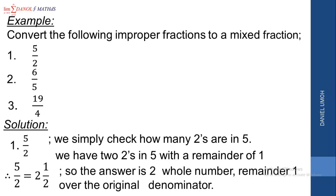I hope you understand what we just explained. What we mean is this: you are given 5 over 2. The first thing we do is check how many 2s are in 5 — of course there are two 2s — with a remainder of 1. So 5 over 2 equals 2 whole number, remainder 1, all over the original denominator 2. That is how to convert from an improper fraction to a mixed fraction.